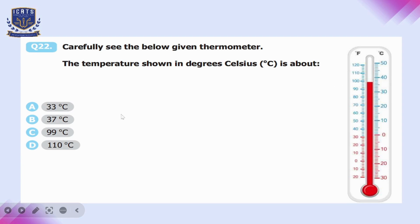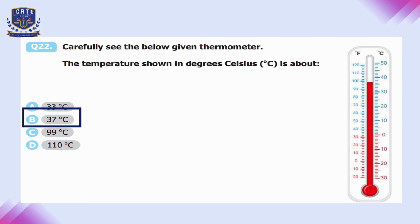Question number twenty-two: what temperature is shown on the thermometer in degrees Celsius? The left side shows Fahrenheit and the right side shows Celsius. The line passes 35 and reaches 37 degrees Celsius. So option B, 37 degrees Celsius, is correct.